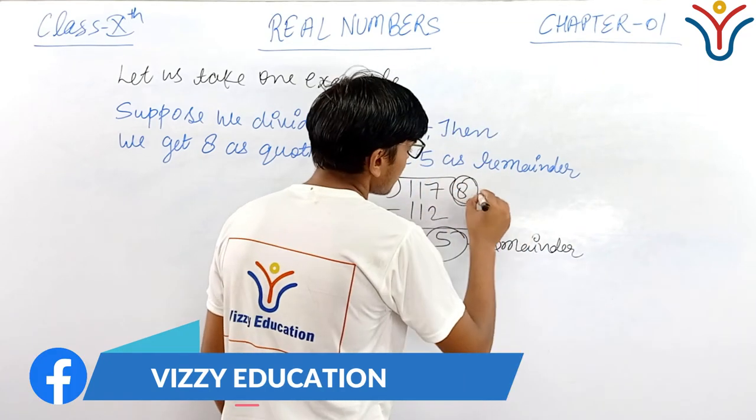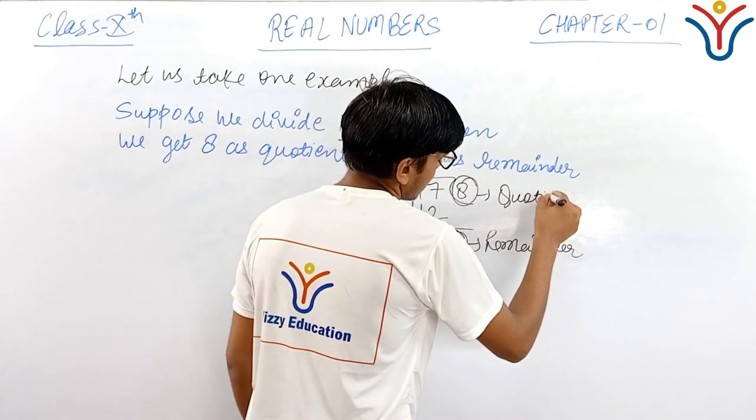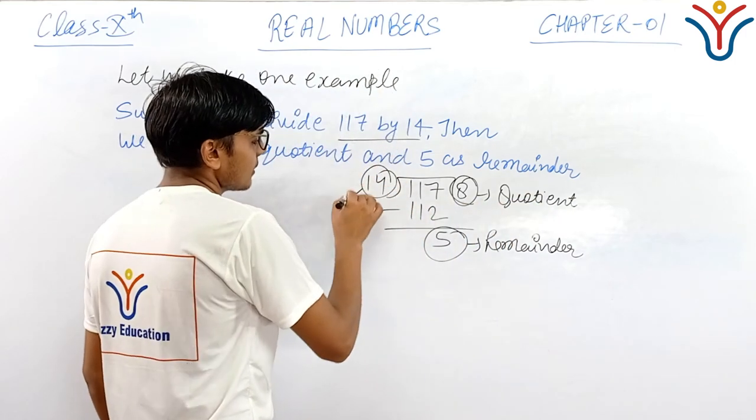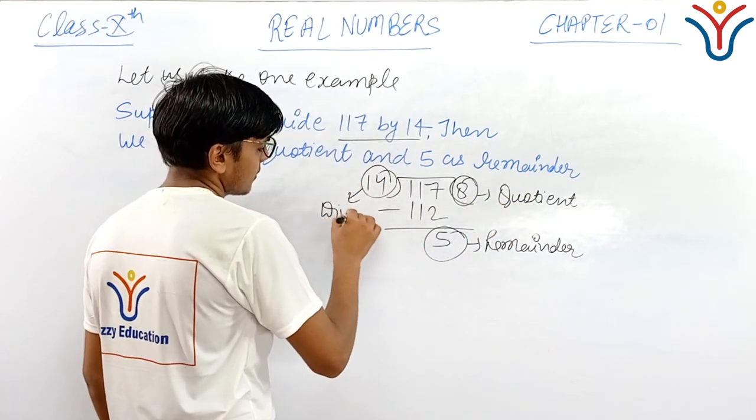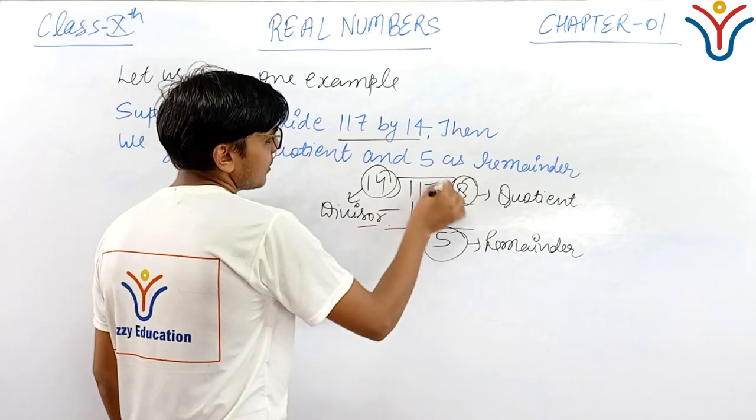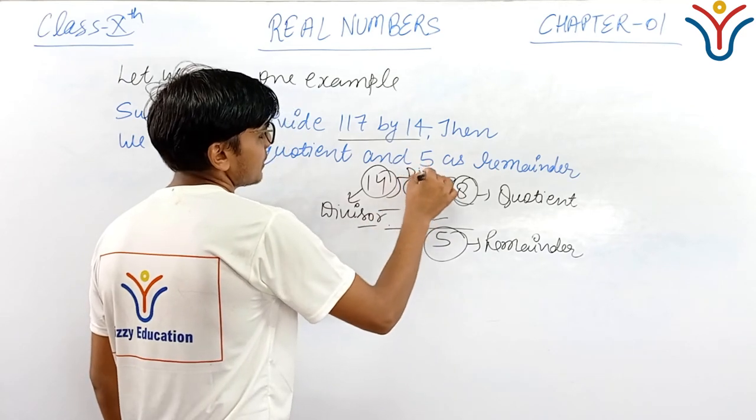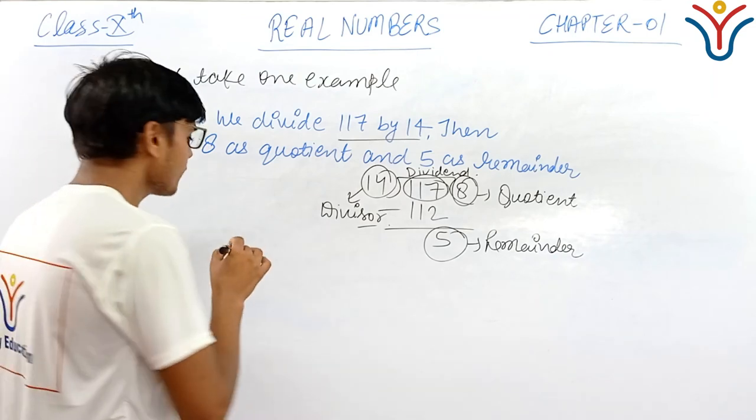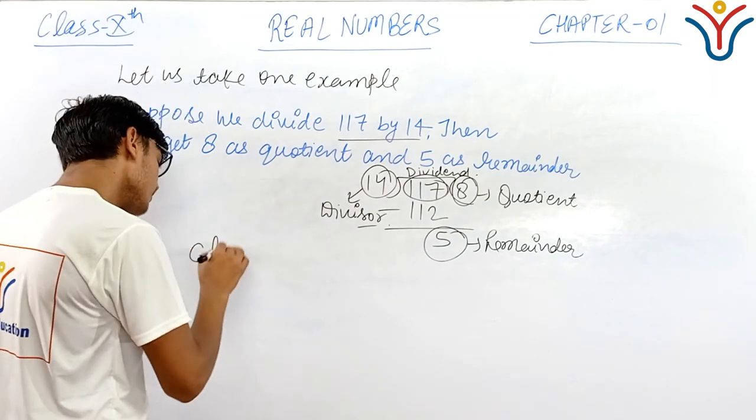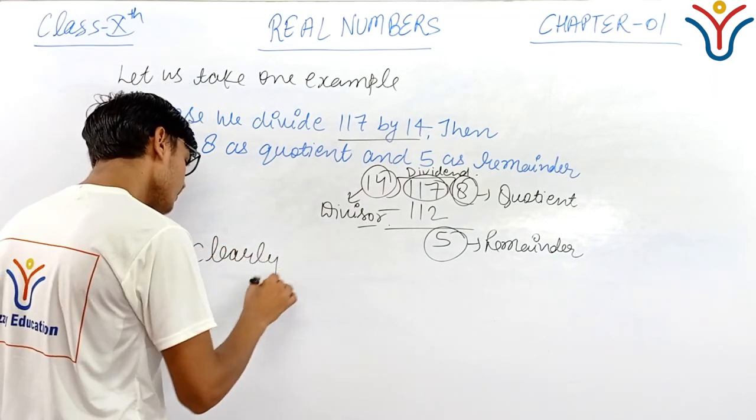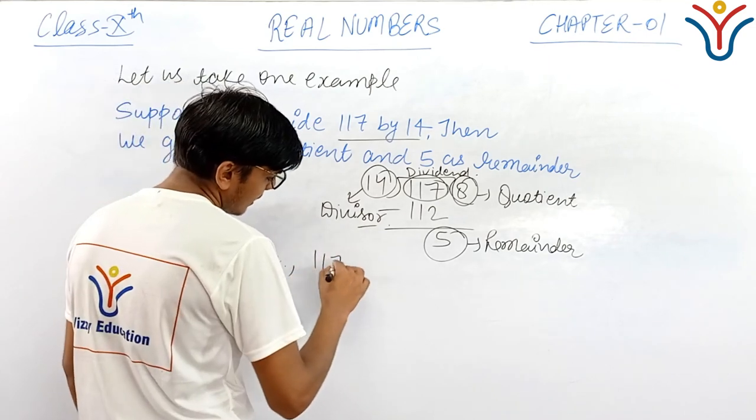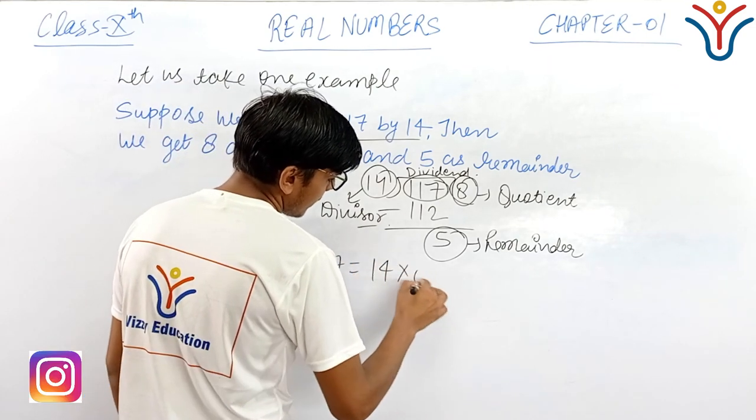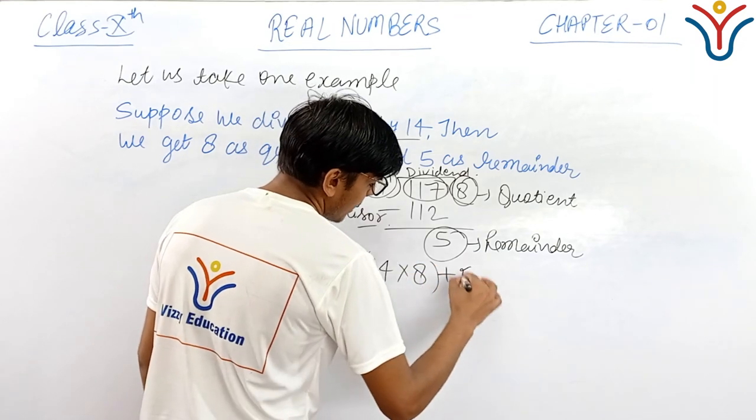8 is the quotient and 14 is the divisor. 117 is the dividend. Now clearly, 117 is equal to 14 multiply by 8 plus 5.